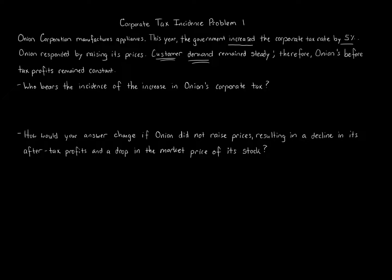When costs go up, prices almost always get reflected in the product through supply and demand curves so the business can stay afloat. You can shift the supply and demand curve, but here it says demand remains steady. Onion responded by raising its prices, and the before-tax profits — even before the five percent increase — remain the same.